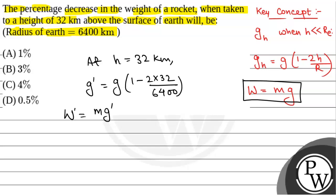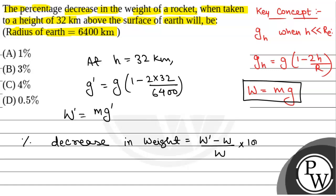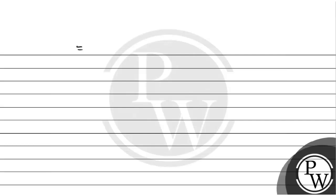The percentage decrease in weight will be equal to (w' - w) / w × 100. Since mass m cancels out, this becomes (g' - g) / g × 100.